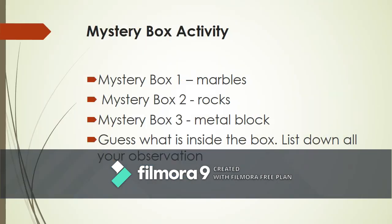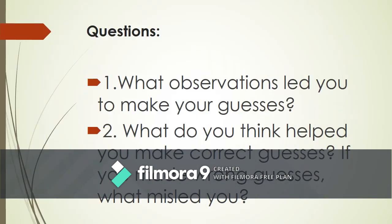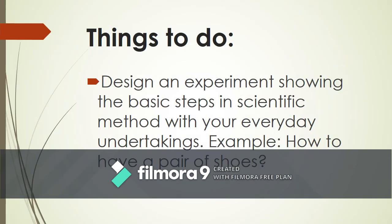In your house, you may do these activities with your siblings — try the mystery box activity: guess what is inside the box, then list down your observations. Ask yourself: what observations led you to make your guesses? What helped you make correct guesses? If you made wrong guesses, what misled you? Then design an experiment showing the basic steps of the scientific method with your everyday undertakings — for example, how to get a pair of shoes. Thank you so much for listening, and see you in class. Bye-bye!